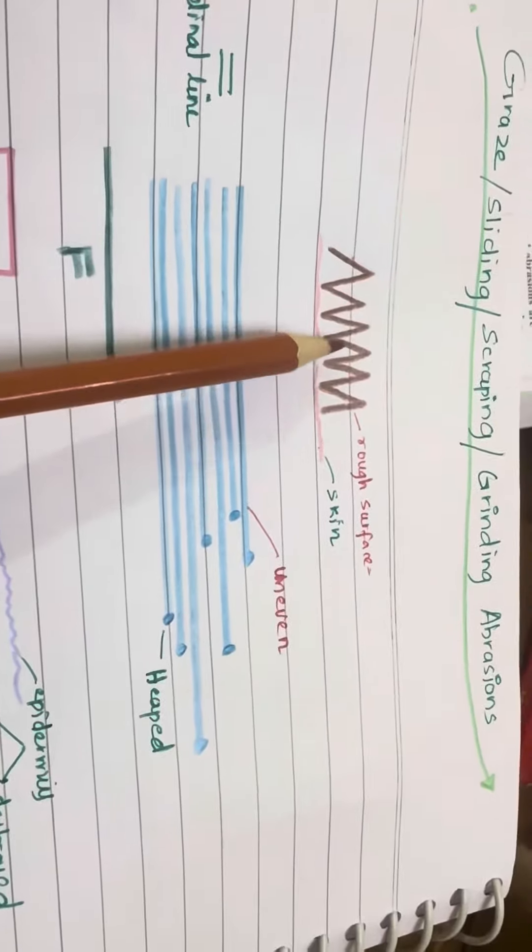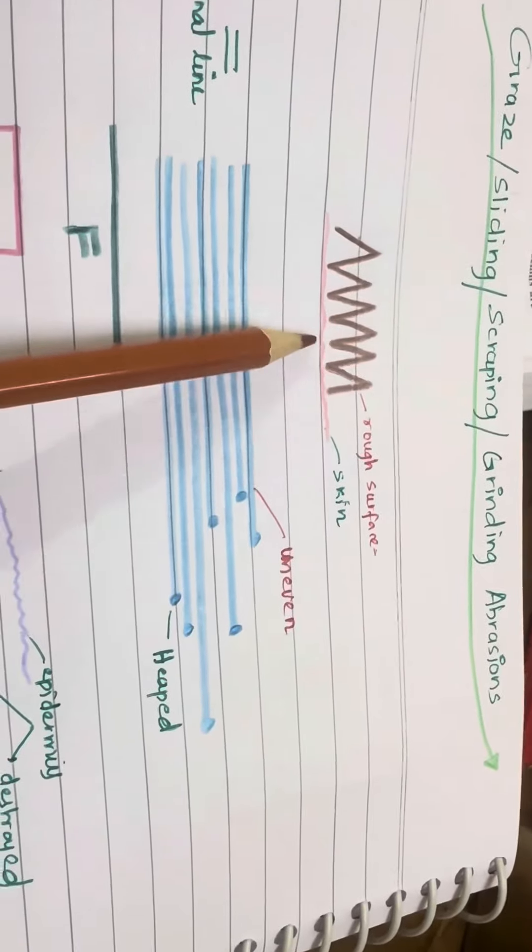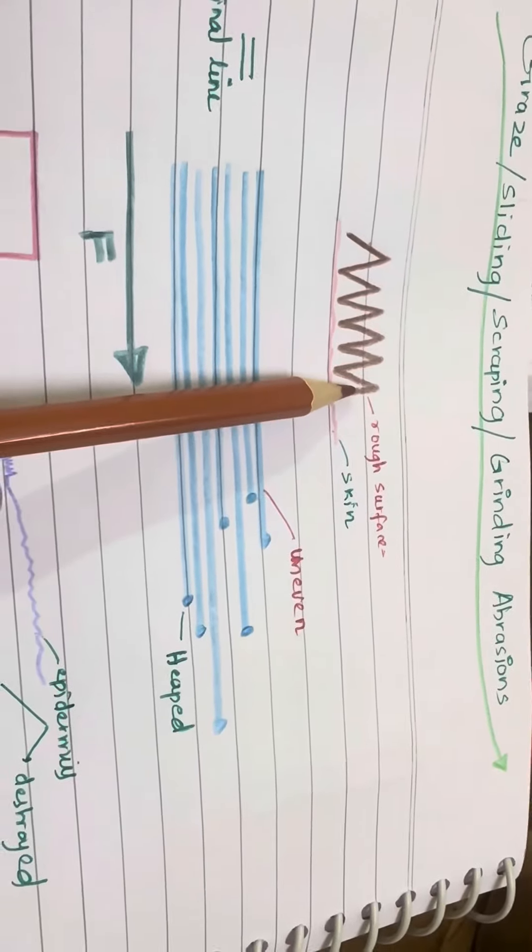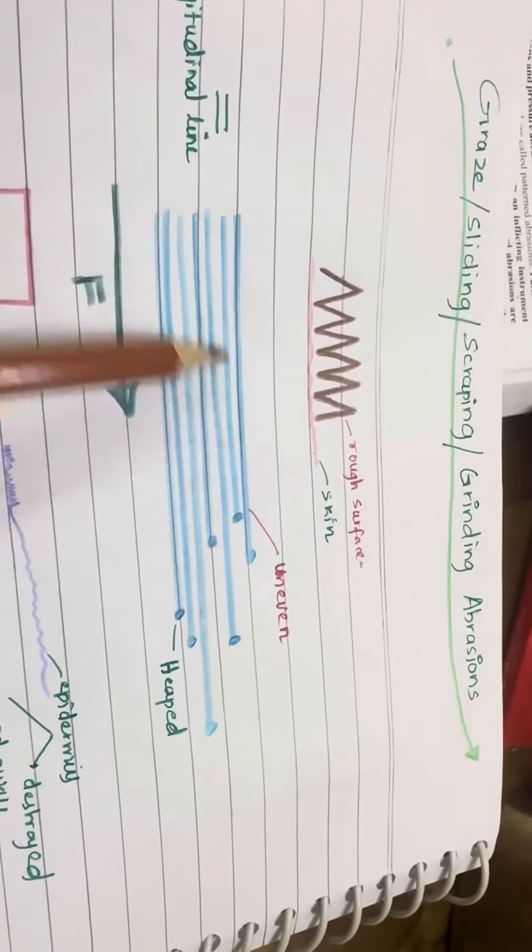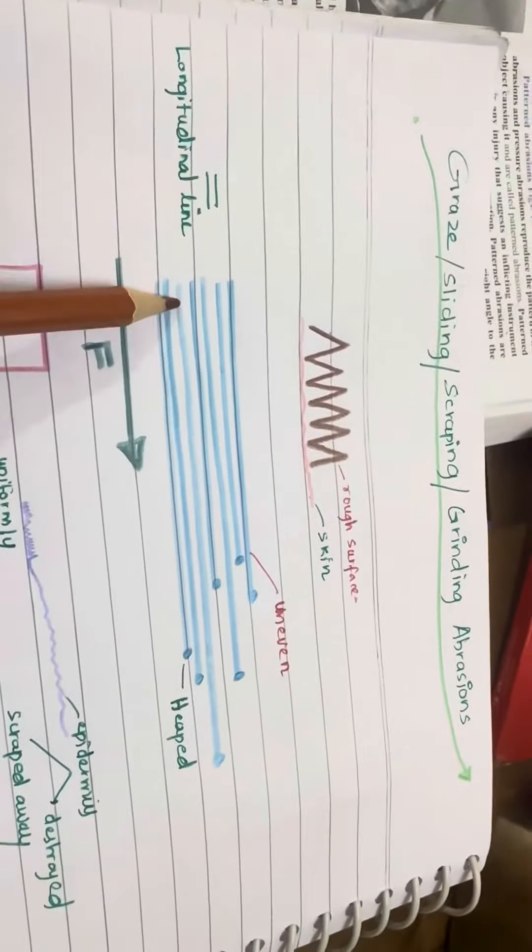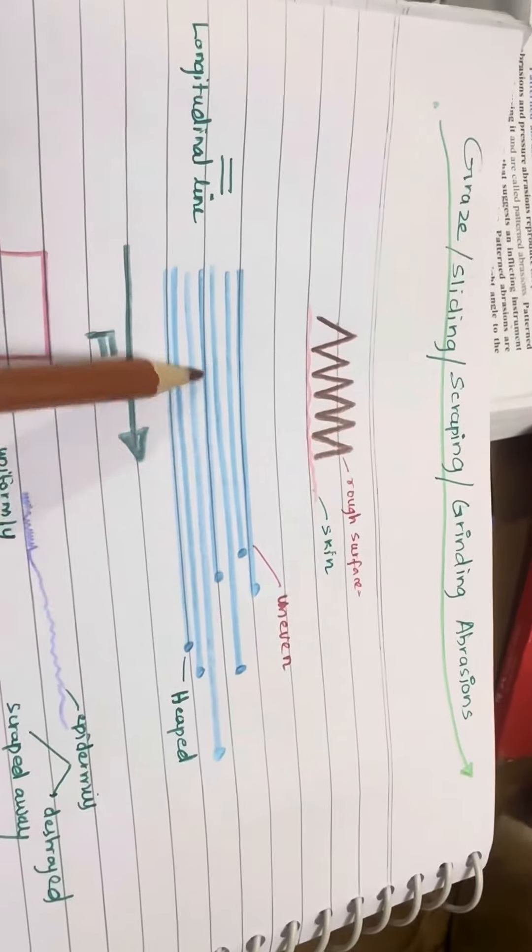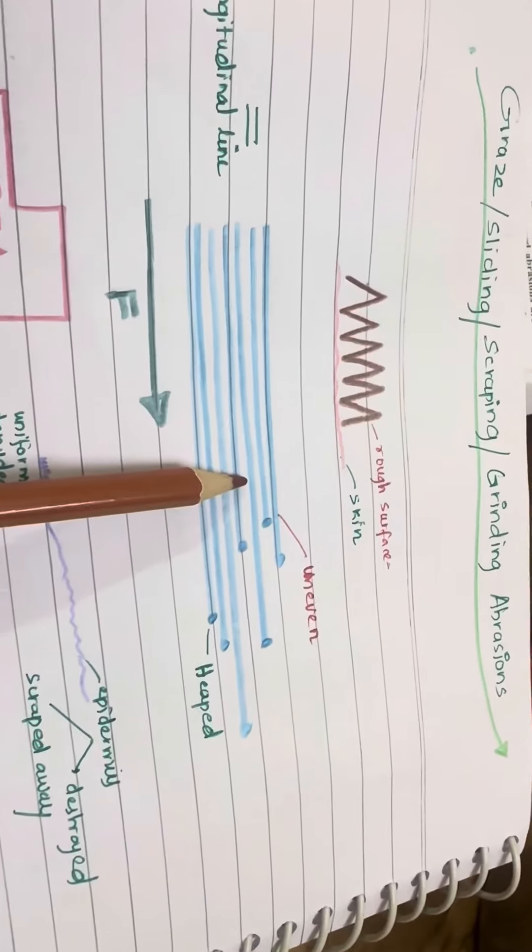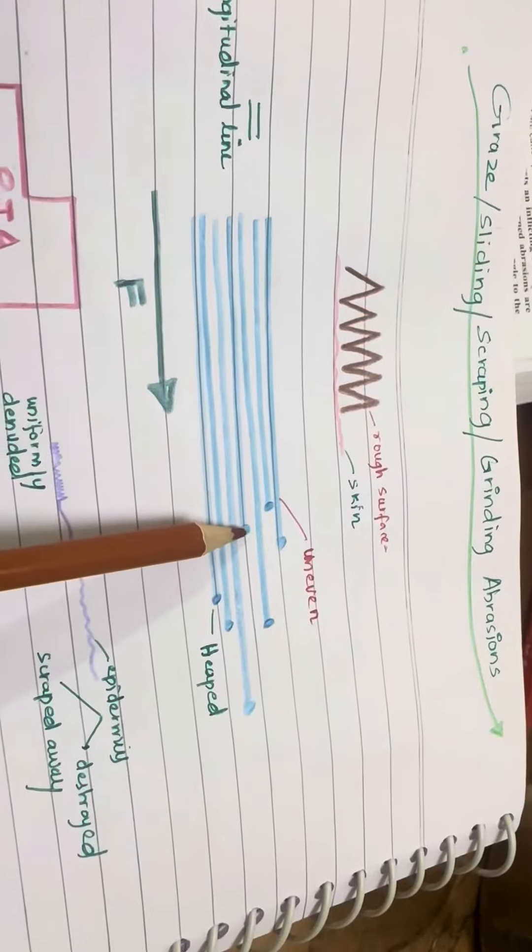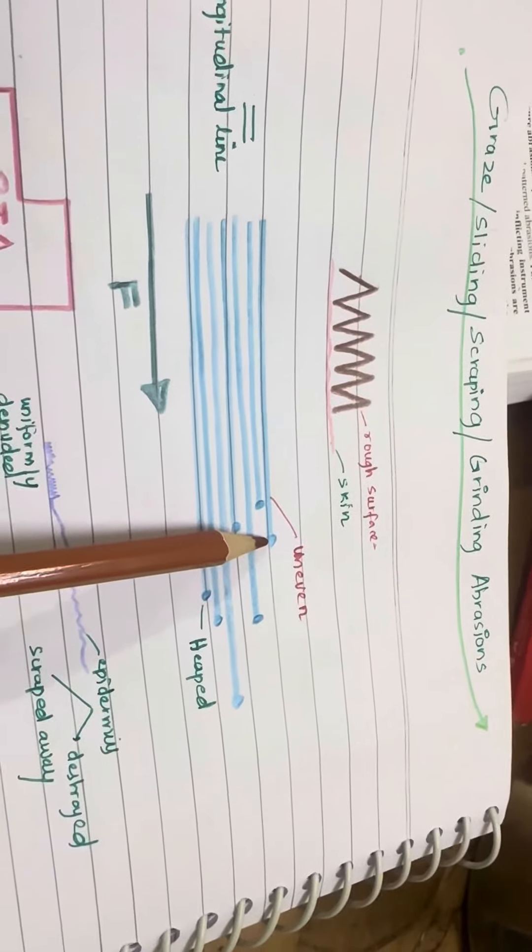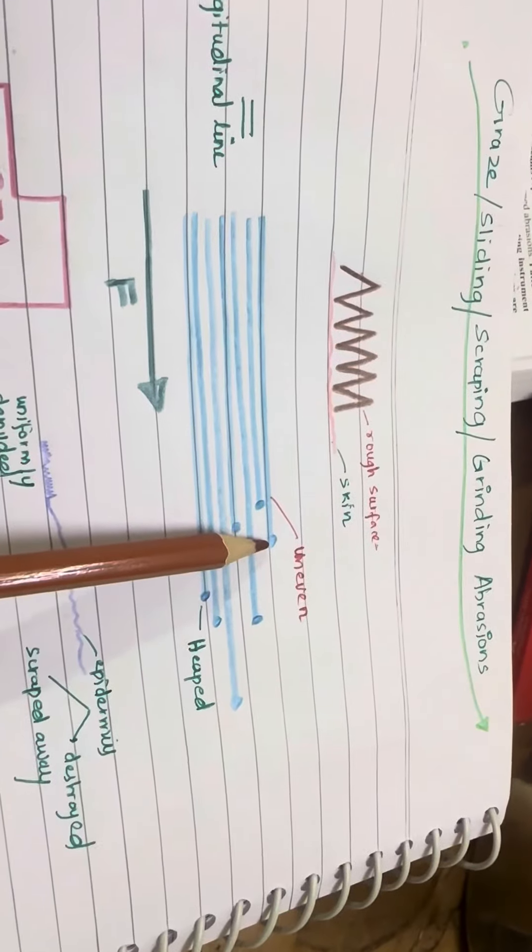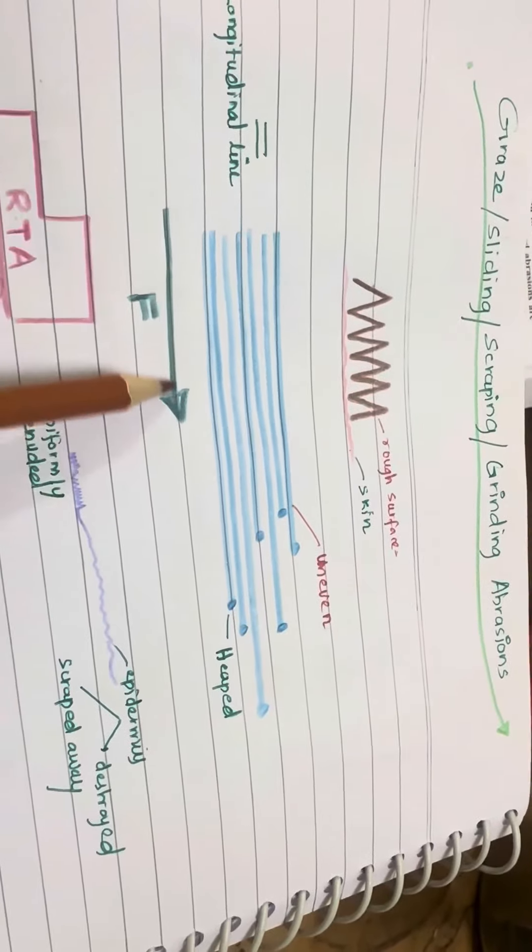They occur when there is a movement between the skin and the rough surface in contact with it. They show uneven, longitudinal, parallel lines within the epithelium heaped at the end of these lines, which does not occur to a significant area, which indicates the direction of the folds.